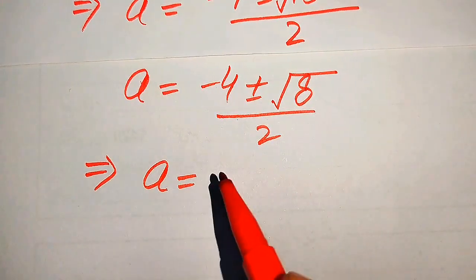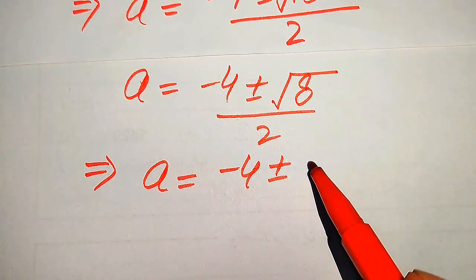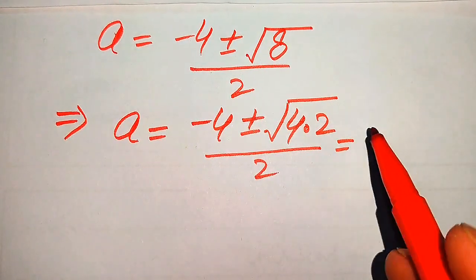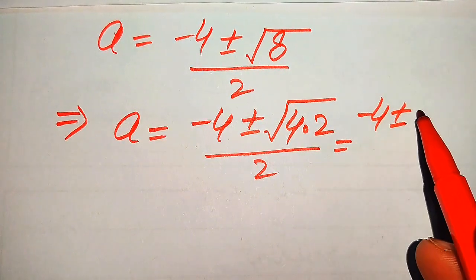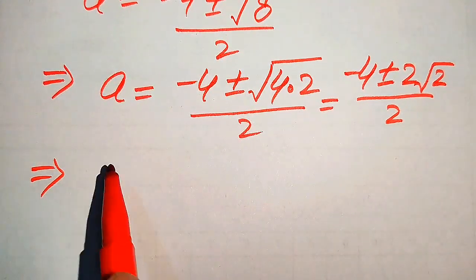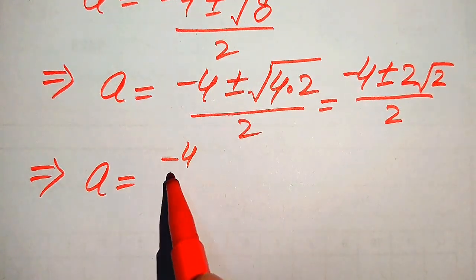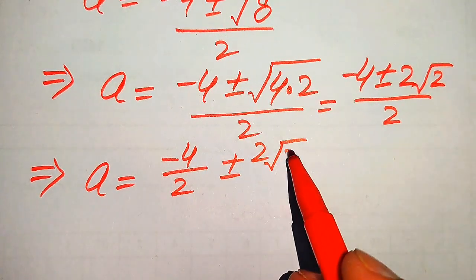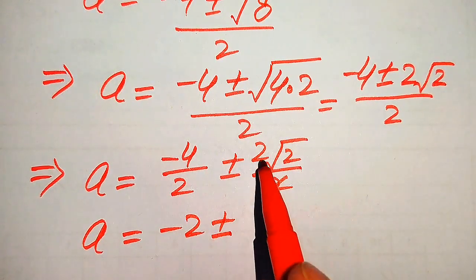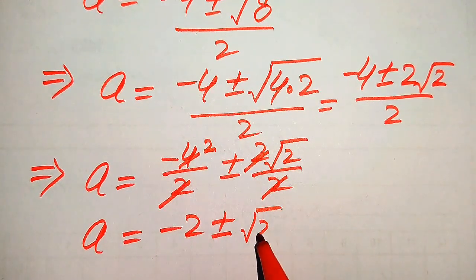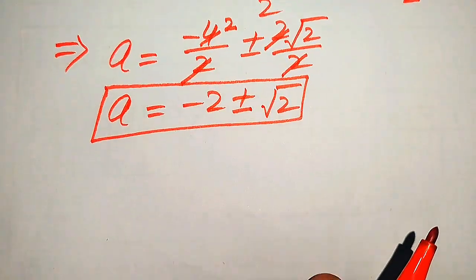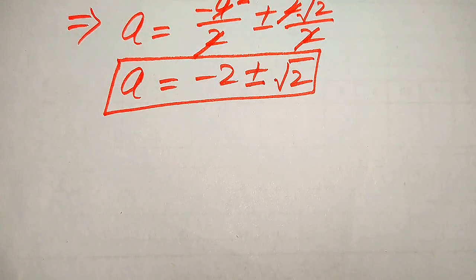For further simplification, we write 8 as 4 × 2, so √8 = √(4×2) = 2√2. The expression becomes (−4 ± 2√2) / 2. Breaking the fraction: −4/2 ± 2√2/2 = −2 ± √2. So the two roots of the equation are a = −2 + √2 and a = −2 − √2. We now verify which roots are solutions and which are extraneous.